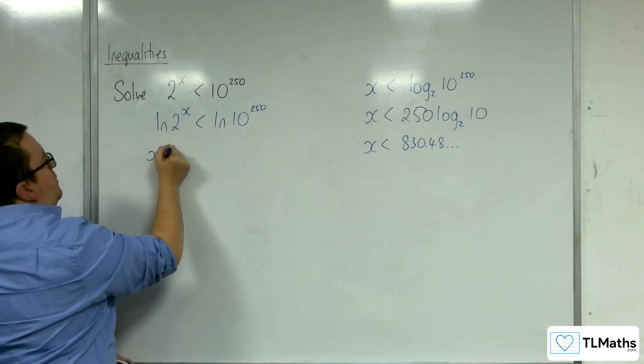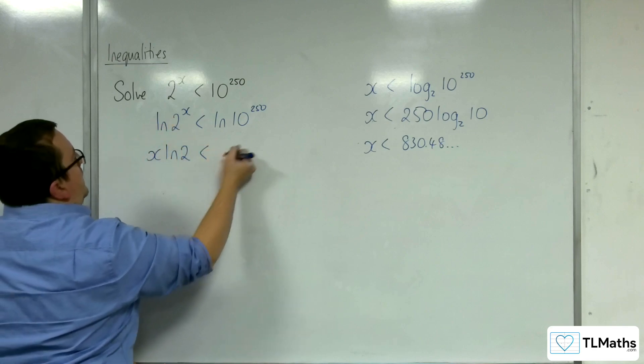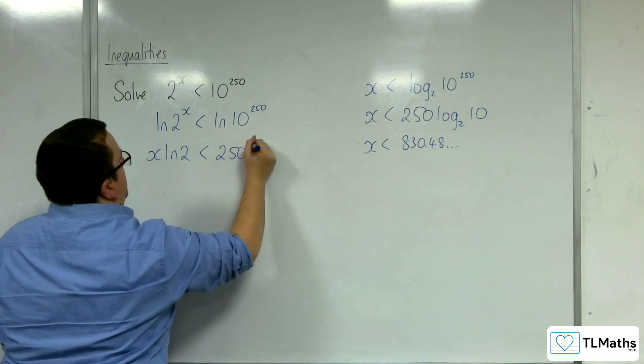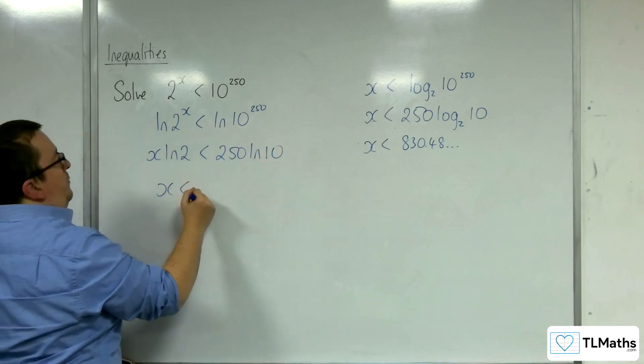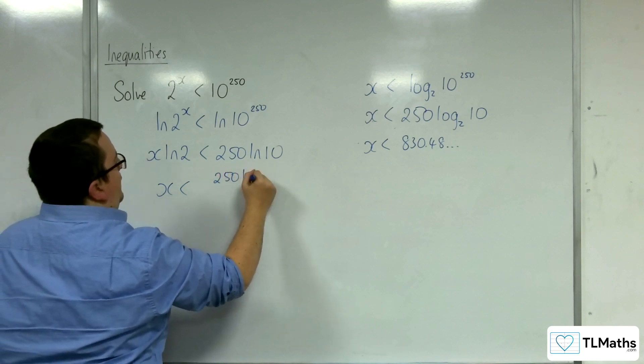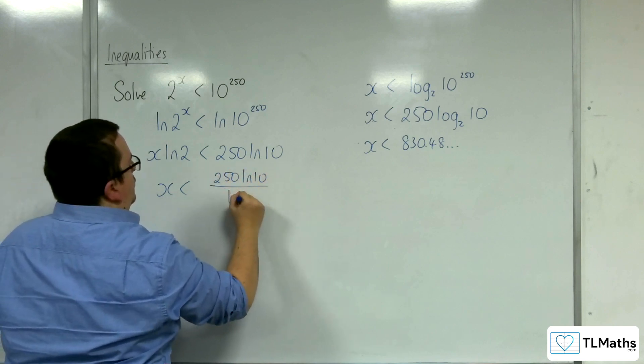Now, the x can come down to the front here, and the 250 can come down to the front there. And so then I can divide both sides by ln 2. So, 250 ln 10 over ln 2.